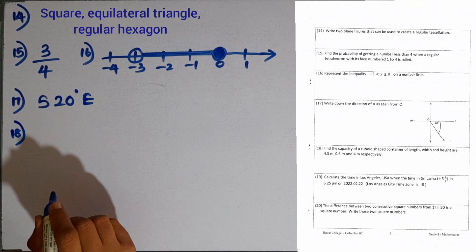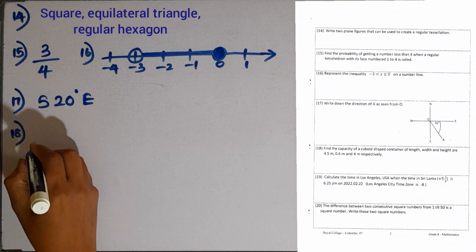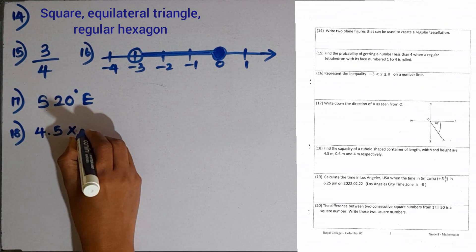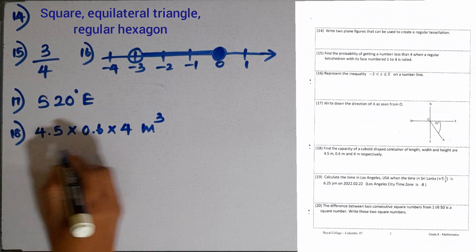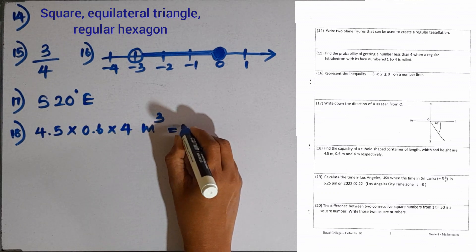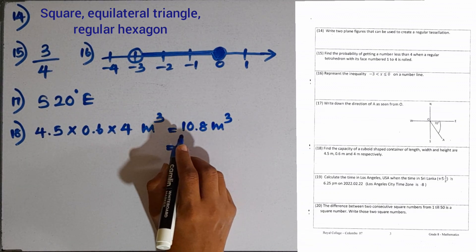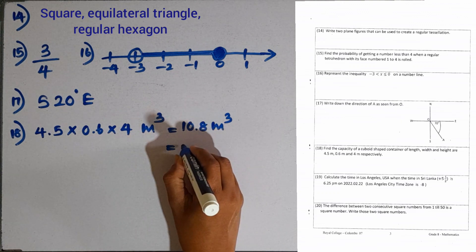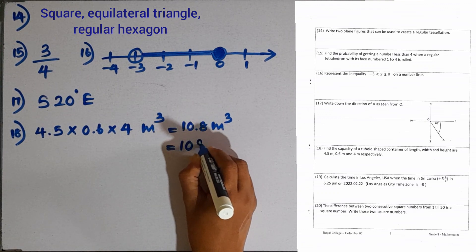Question number 18. Find the capacity of a cuboid shaped container of length, width and height 4.1 metres, 0.6 metres and 4 metres respectively. To find the volume, multiply 4.5 into 0.6 into 4 cubic metres. The value becomes 10.8 cubic metres. To get the capacity, convert to litres: 1 cubic metre equals 1000 litres, so the answer is 10,800 litres.